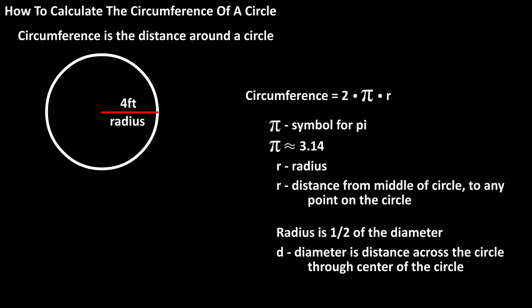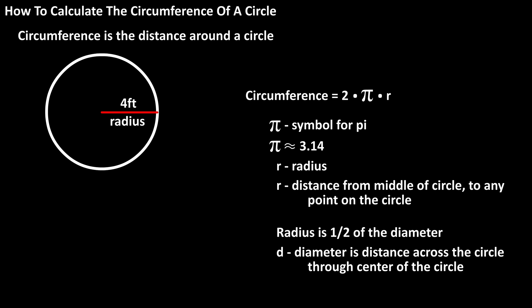As an example, if we wanted to know the circumference of a circle with a radius of 4 feet, using the formula, we have circumference equals 2 times 3.14 times 4, which equals approximately 25.12 feet. We say approximately because we are rounding pi off to 3.14.